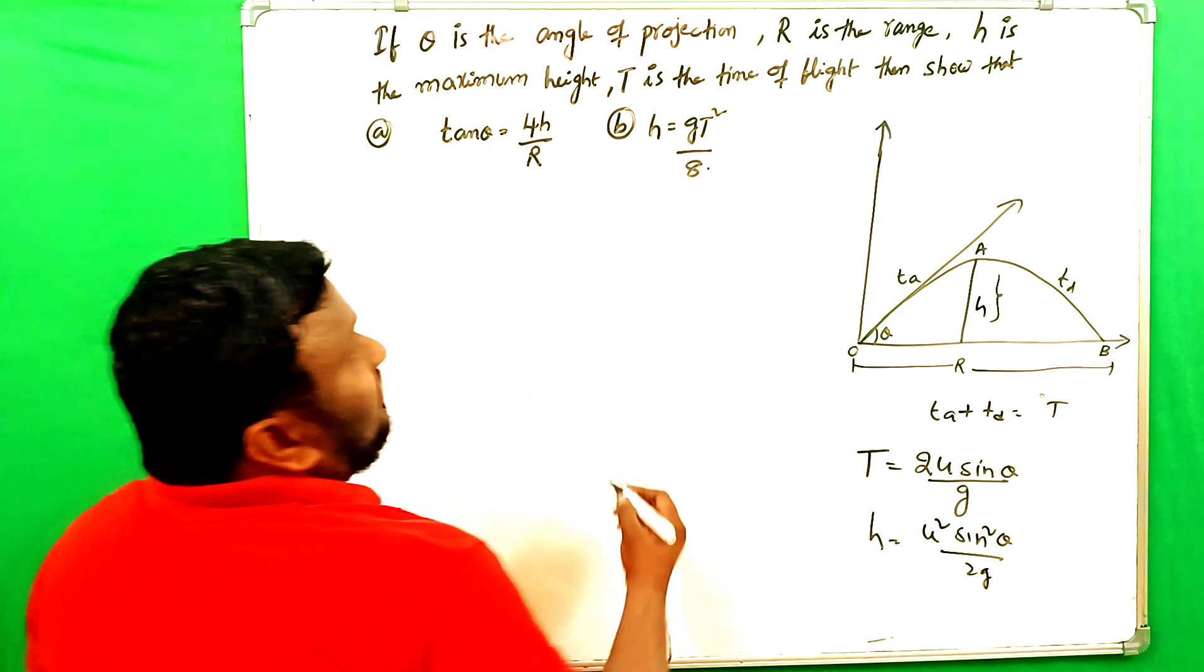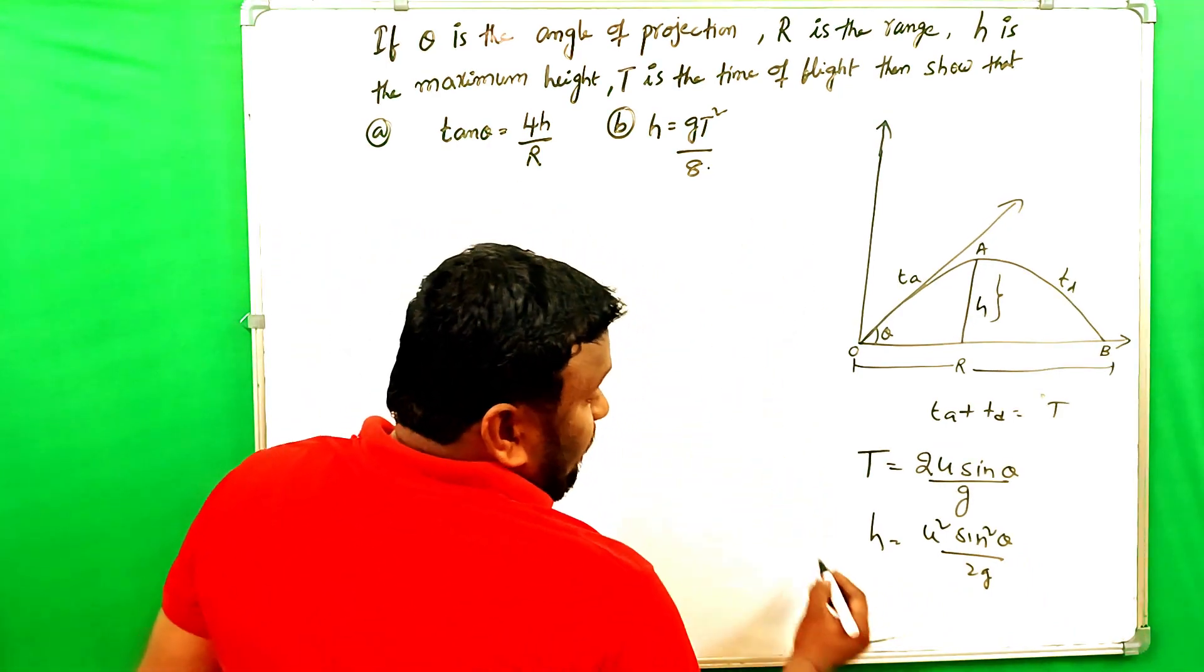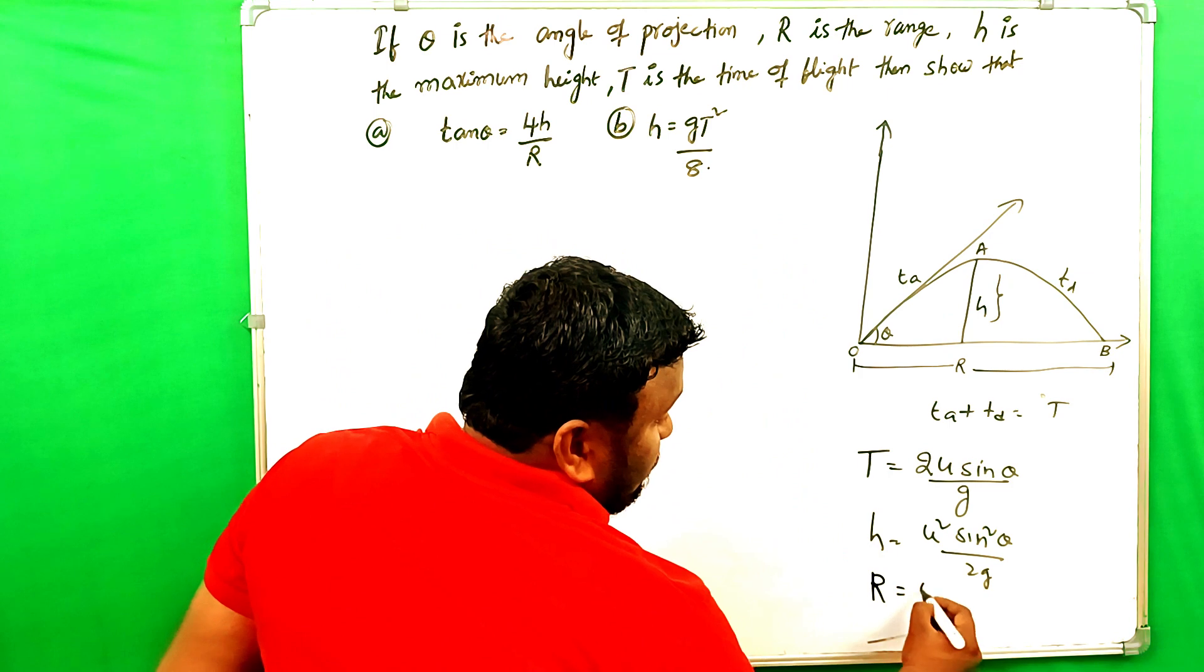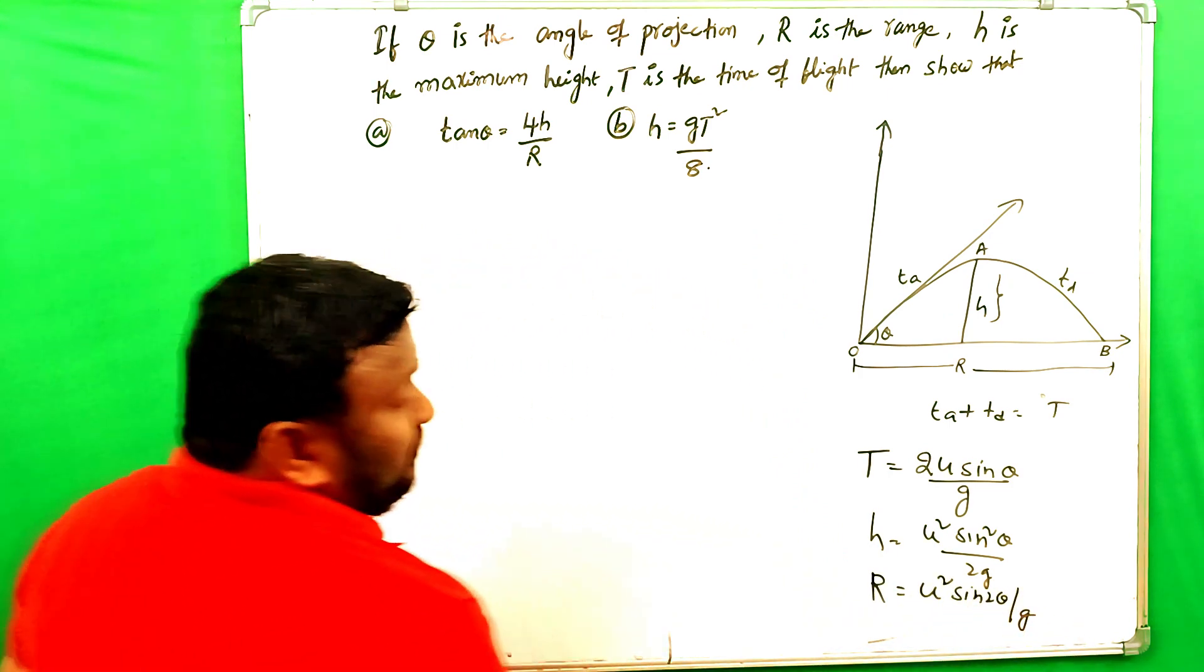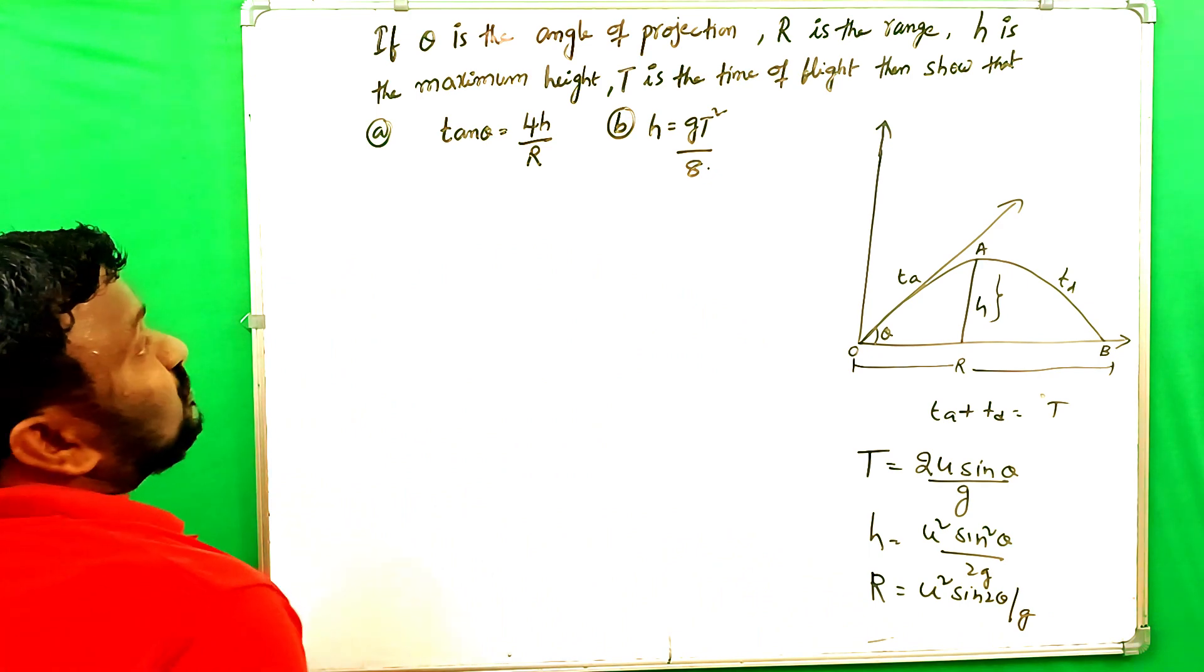Now, u squared sin squared theta by 2g. And next one is r, range. Range formula is r is equals to u squared sin 2 theta by g.